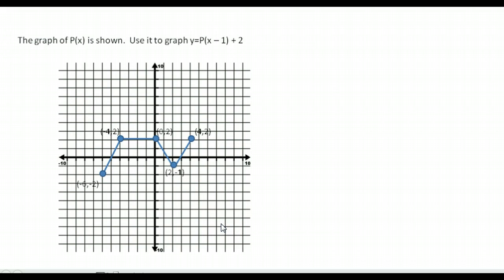We've talked about different transformations that can happen to a graph. Now let's look at how it actually affects the graph and how we would graph the results. This can be a bit confusing, the terminology here. The graph of P of X is shown — this is P of X, the picture that is right now on the graph. We need to make the proper transformations we've learned to make a new graph from this one.